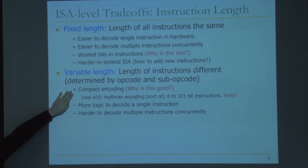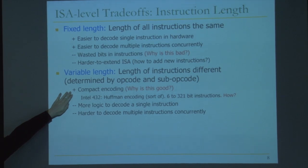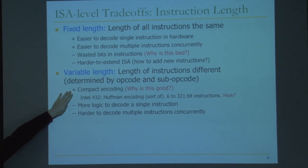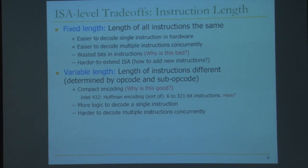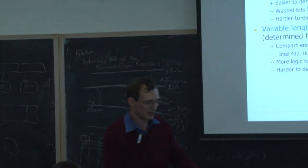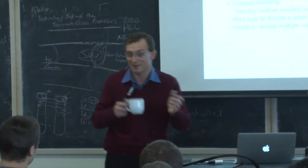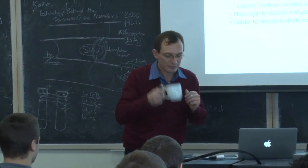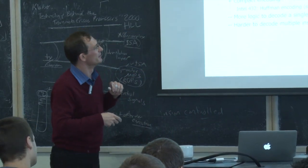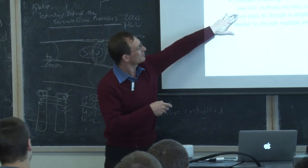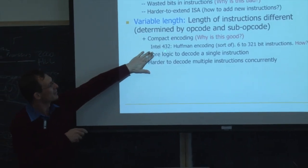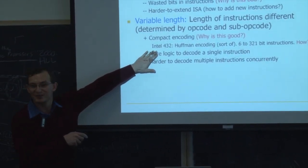Why is compact encoding good? Your code is small, you load it faster, you don't need to access memory as often. You can also utilize your caches more efficiently. Intel x86 has variable length instructions. Intel 432 had Huffman encoding of instructions, where an instruction could be anywhere from 6 bits to 321 bits. The idea was to minimize the expected size of an instruction by assigning shorter codes to more frequently used instructions.